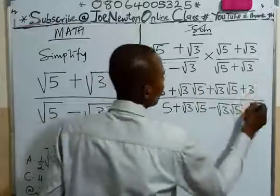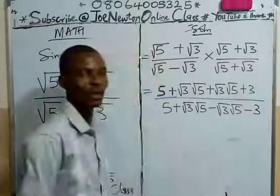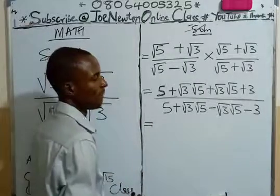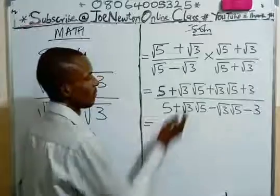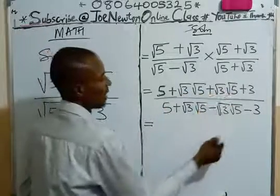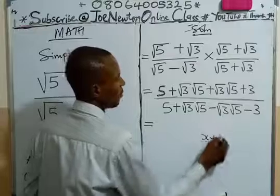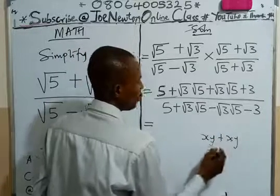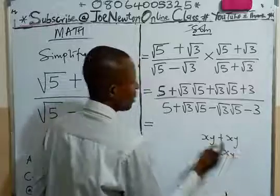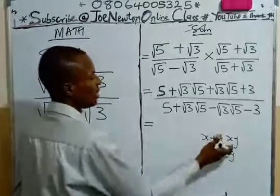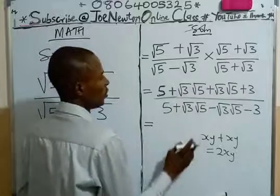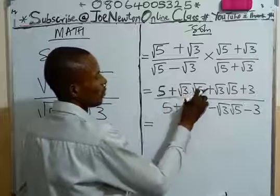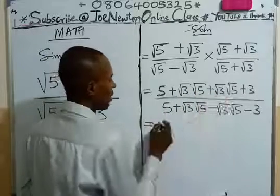So that's the numerator. Then the next step, we simplify further by like terms. This and this are like terms. It's like when you have xy + xy, that will give you 2xy because they are like terms. So using this knowledge, it will give us 5 + 2√3√5 + 3. How do we get this? We have √3√5 plus another √3√5, like xy + xy gives 2xy.